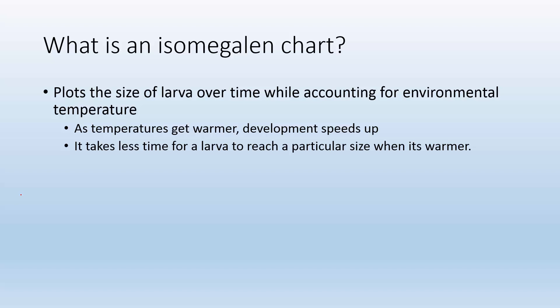It's basically just a chart that plots the size of larva over time while accounting for environmental temperature. As temperature gets warmer, the development speeds up, so things grow quicker. And it takes less time for larva to reach a particular size when it's warmer.